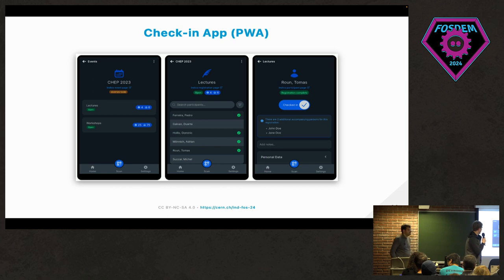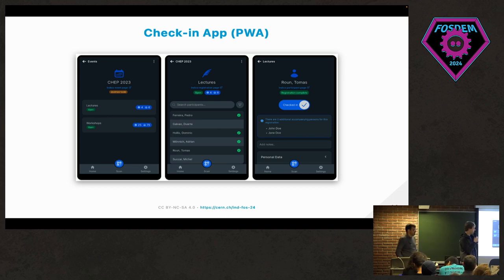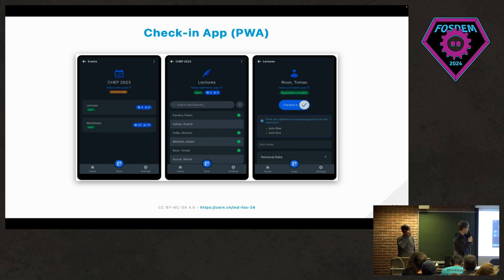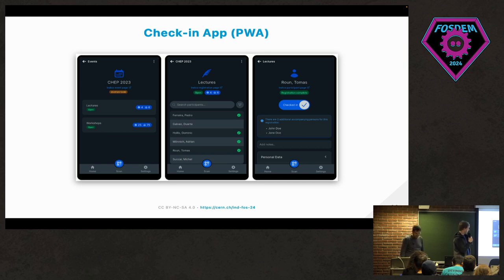One last feature: a check-in application. Previously it was a React Native app, but it was rewritten from scratch as a PWA — a Progressive Web Application. Like at any conference, you might have someone at the door scanning badges or tickets. This app runs on a smartphone and provides QR code reading, attendee detail lookup, check-in functionality, and other related features.